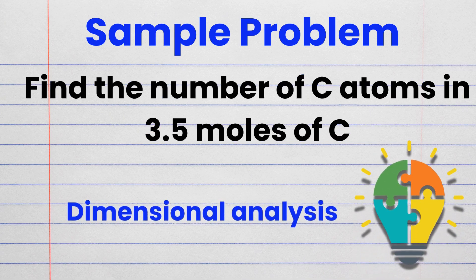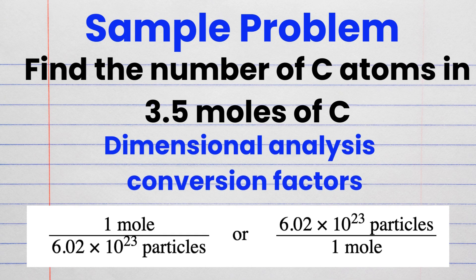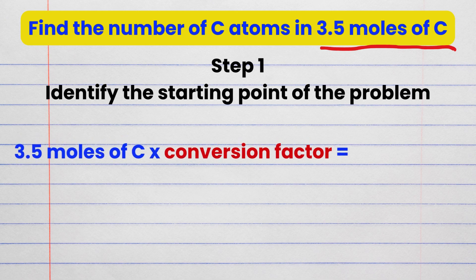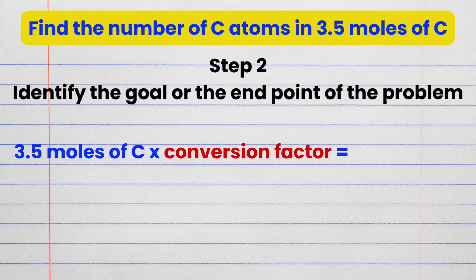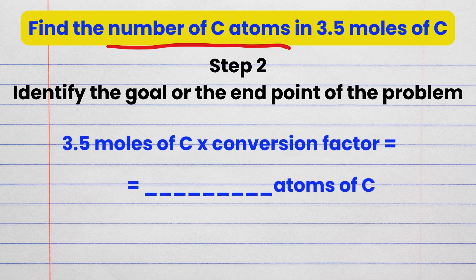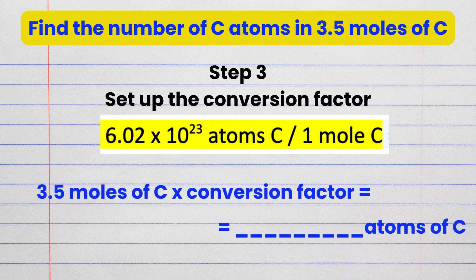We will use dimensional analysis to solve this, since it allows us to convert between different units using conversion factors, leaving us with the desired units for our final answer. Step 1: identify the starting point — 3.5 moles of carbon. We multiply the starting point with an appropriate conversion factor to get to our end point. Step 2: identify the goal — the number of carbon atoms — so it will be 3.5 moles of carbon times a conversion factor equals blank atoms of carbon.